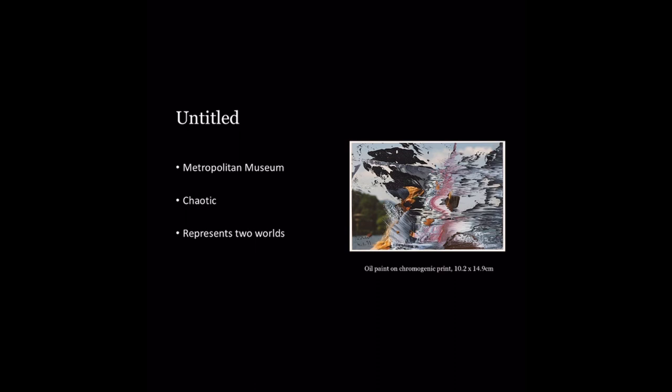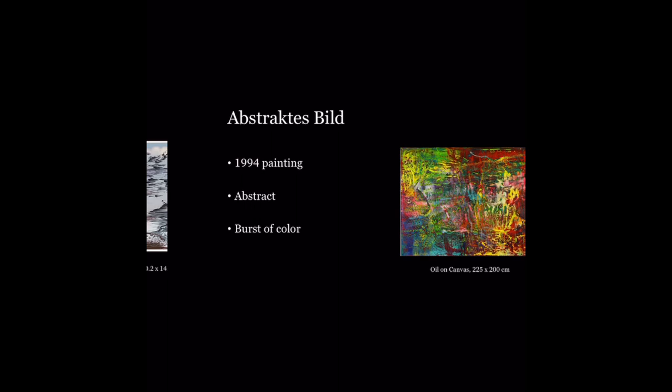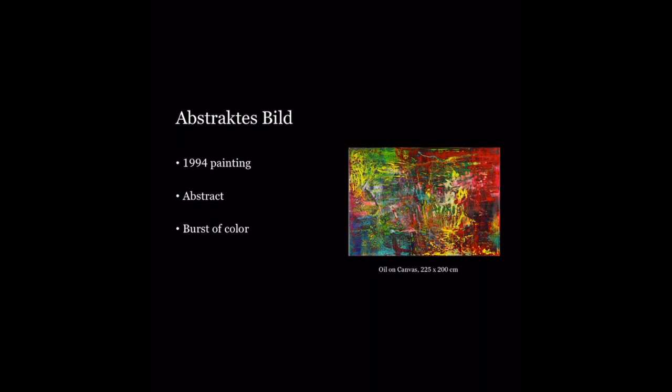The third work is called Abstract Bild and it's oil on canvas. It was a 1994 painting and an abstract work with many different colors. In this painting, Richer was creating a kind of beautiful burst of color in which chaos can represent good and how he could turn his world into something positive through his paintings.